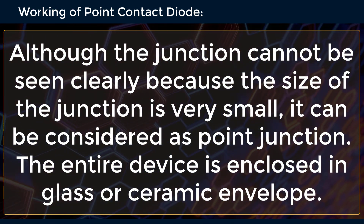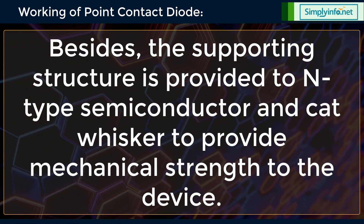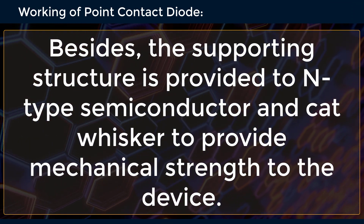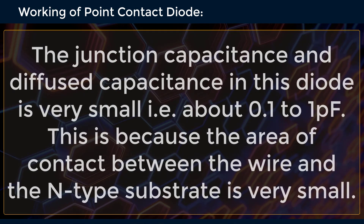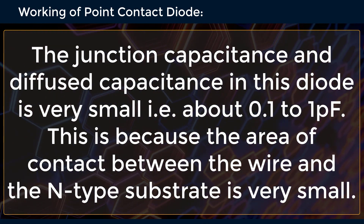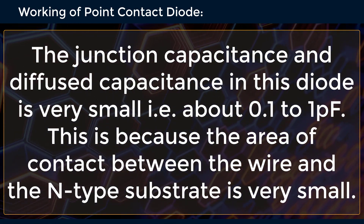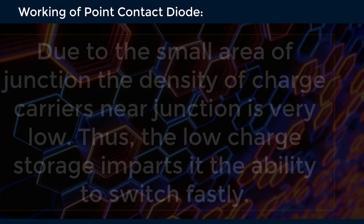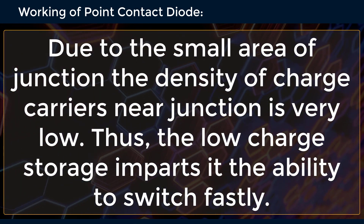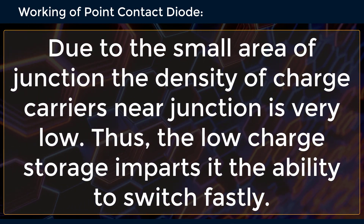The entire device is enclosed in a glass or ceramic envelope. A supporting structure is provided to the n-type semiconductor and whisker to provide mechanical strength. The junction capacitance and diffusion capacitance in this diode is very small, about 0.121 pF. This is because the area of contact between the wire and the n-type substrate is very small, resulting in very low density of charge carriers near the junction. Thus, the low charge storage imparts fast switching ability.